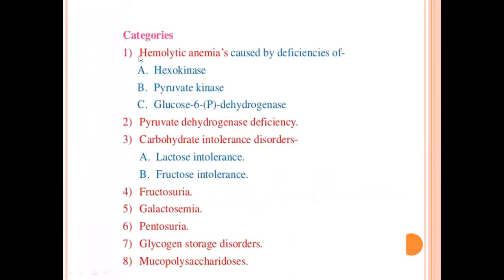Let's see the categories. Number 1 is Hemolytic Anemia. In this type of anemia, the destruction of red blood cells is faster than their production, and therefore anemic conditions develop. Hemolytic Anemia is caused by deficiencies of 3 different enzymes. Enzyme A is Hexokinase — we discussed Hexokinase during glycogenesis, where in the first reaction glucose was converted to glucose 6-phosphate in the muscles. If Hexokinase is deficient, it will not be converted to glucose 6-phosphate and glycogen synthesis will be affected.